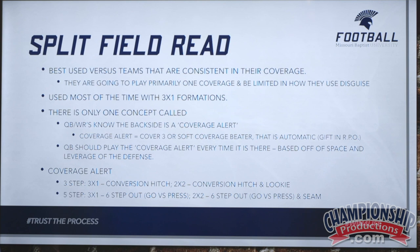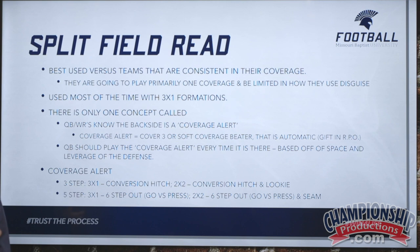In a two-by-two, the number one receiver on the coverage alert is going to run a hitch with the inside guy running a quick slant or a looky route. Whether it's two-by-two or three-by-one, all of our hitches are converted into a go versus press or cloud. So if they get a cloud corner like cover two, they'll convert that to a go outside release. If they get press man, they're going to convert that to a go as well.